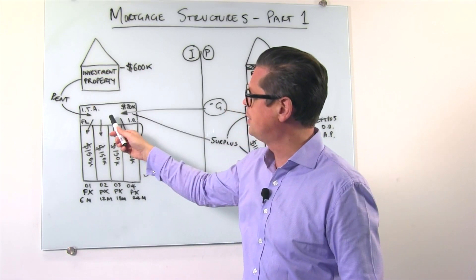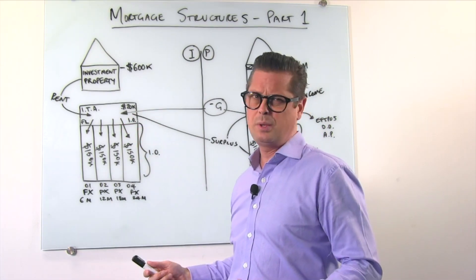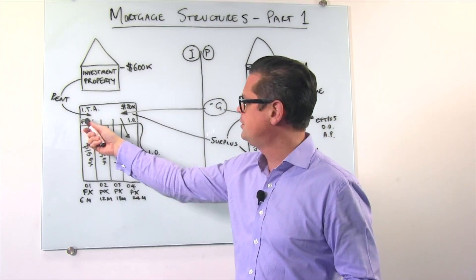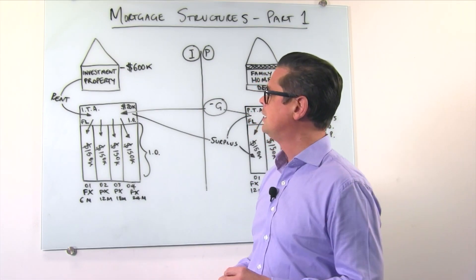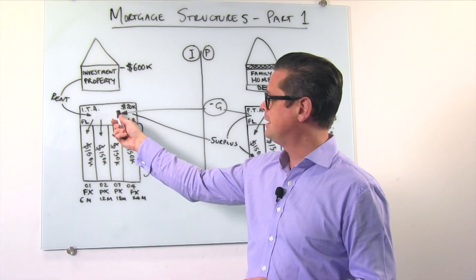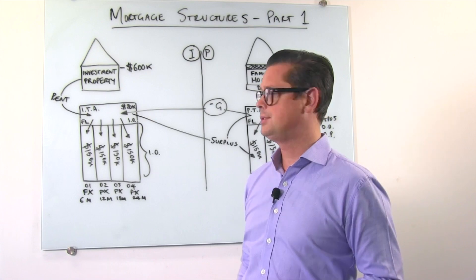As you can see the rent's going into the investment transaction account. Again, it's got a buffer facility of about $20,000. It's floating and interest only again. It's just a standard transactional facility that the banks would set up. And the rent is going in there and it's feeding those interest only components into these loans here.